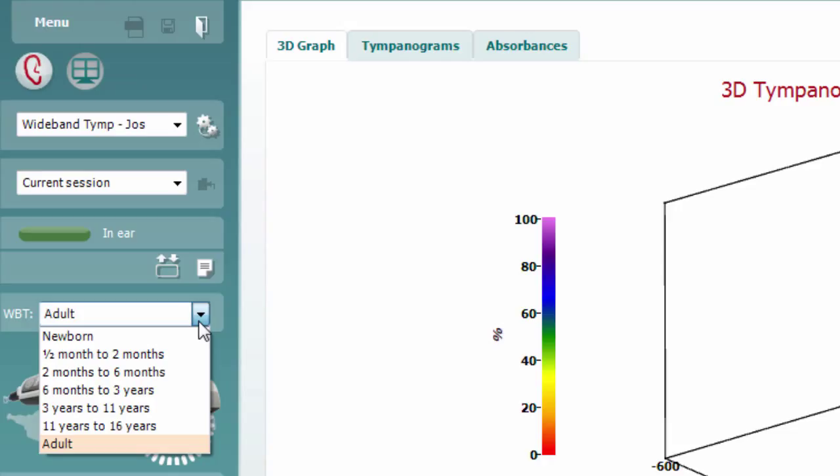If opening from AutoAccess or NOAH, the patient demographics will be correctly selected in the software automatically.